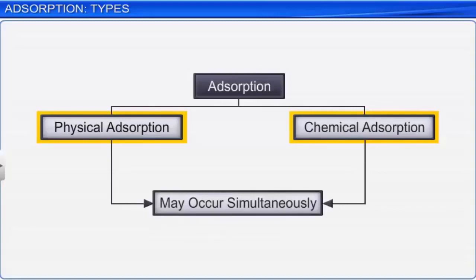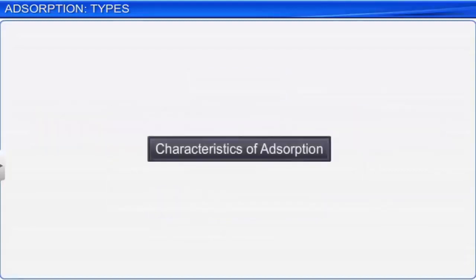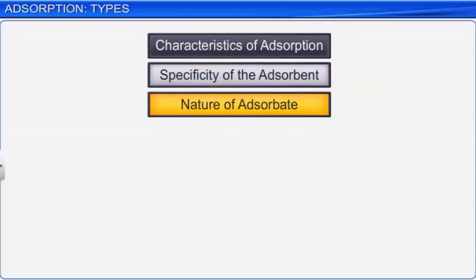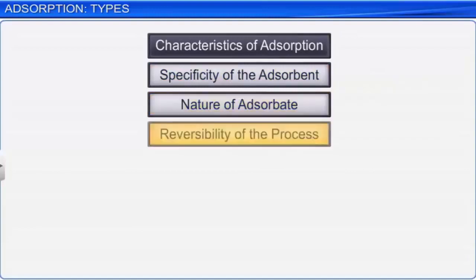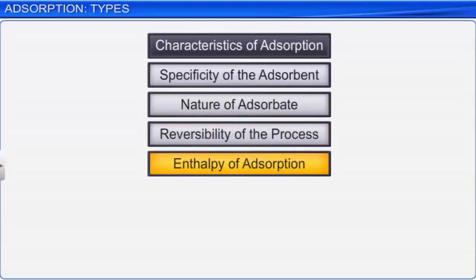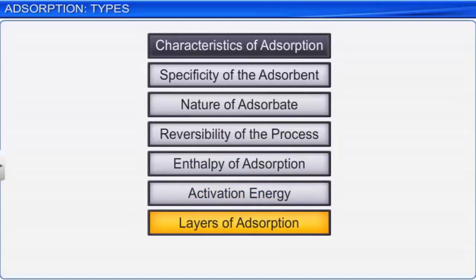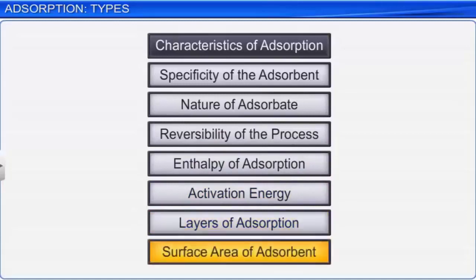The basic characteristics of adsorption depend on the specificity of the adsorbent, nature of the adsorbate, reversibility of the process, enthalpy of adsorption, activation energy, layers of adsorption, and surface area of the adsorbent. Let us discuss how each of these characteristics affects physical and chemical adsorption.